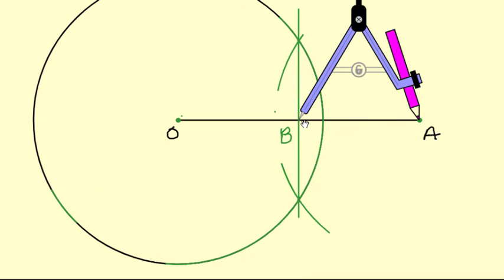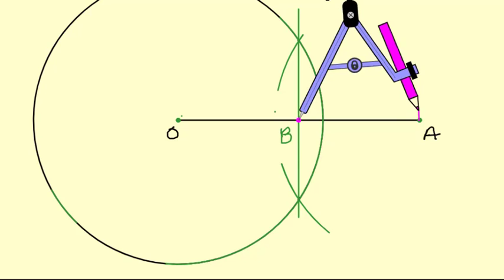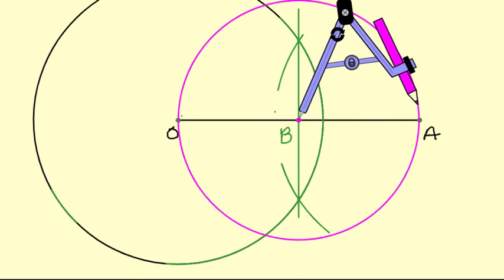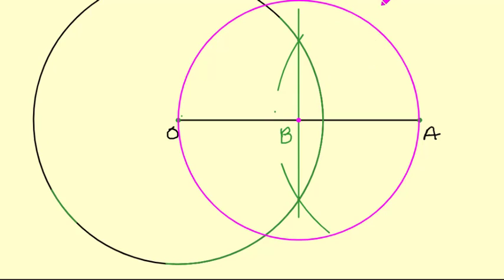Taking this midpoint B as the center, we will draw a circle. Now we have got the circle. We want this point and this point where it intersects, so we will join A with this point and A with the other point, and these will be our tangents.